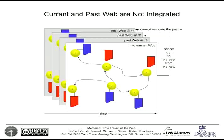To summarize the problem: the current web and the past web are not tightly integrated. There are two issues: you can't easily get to the past from the present — it becomes a search or navigation exercise — and you can't navigate the past in a consistent way. Those are the two problems Memento is trying to address.